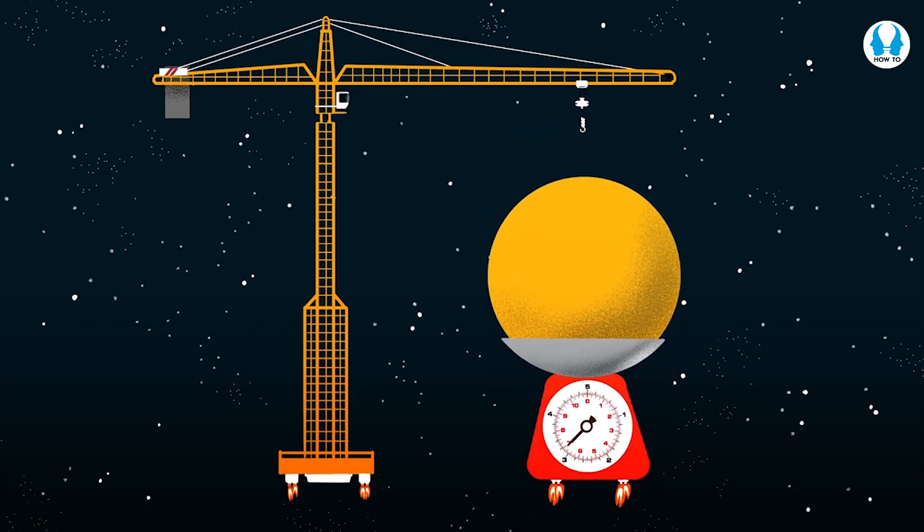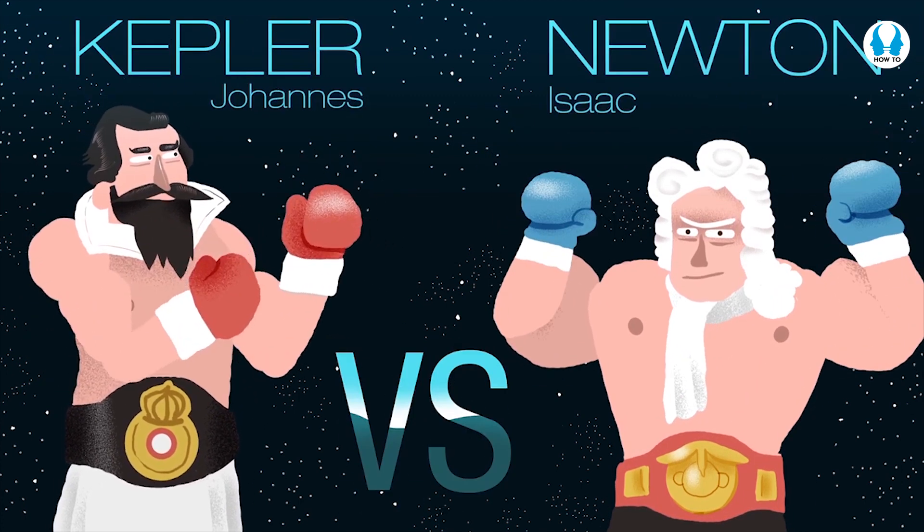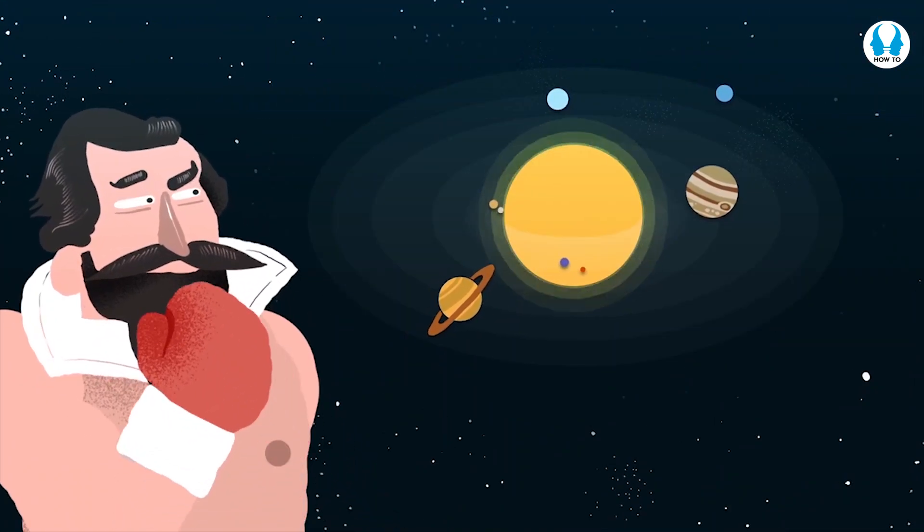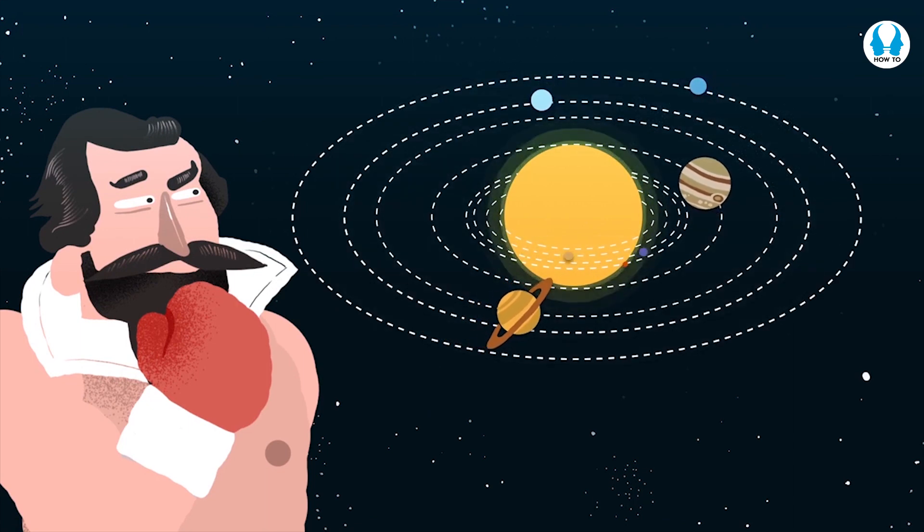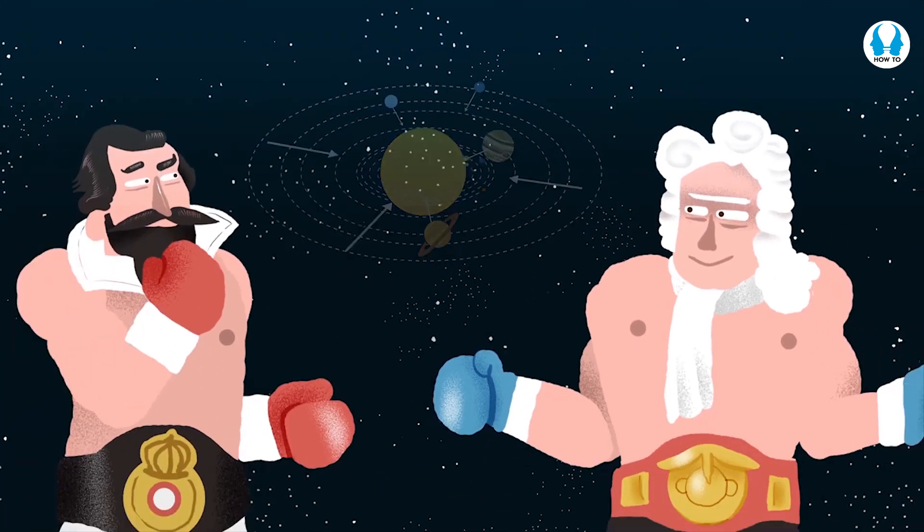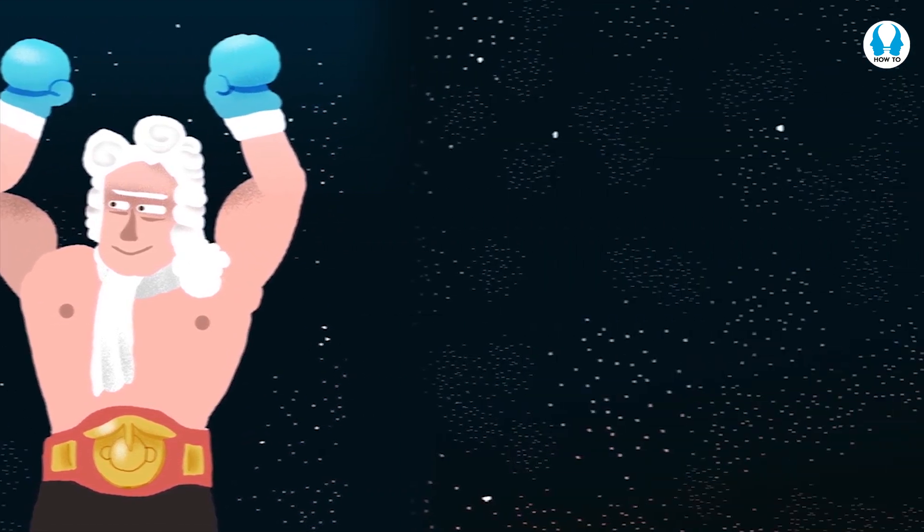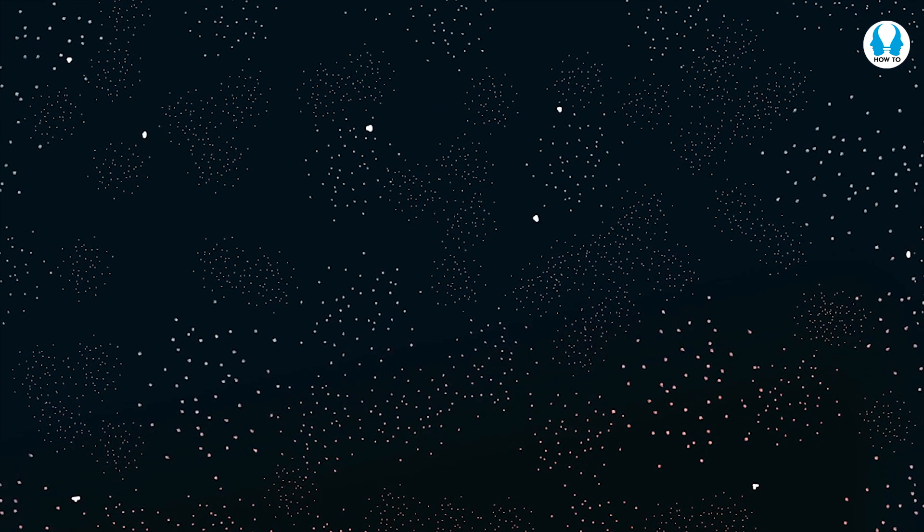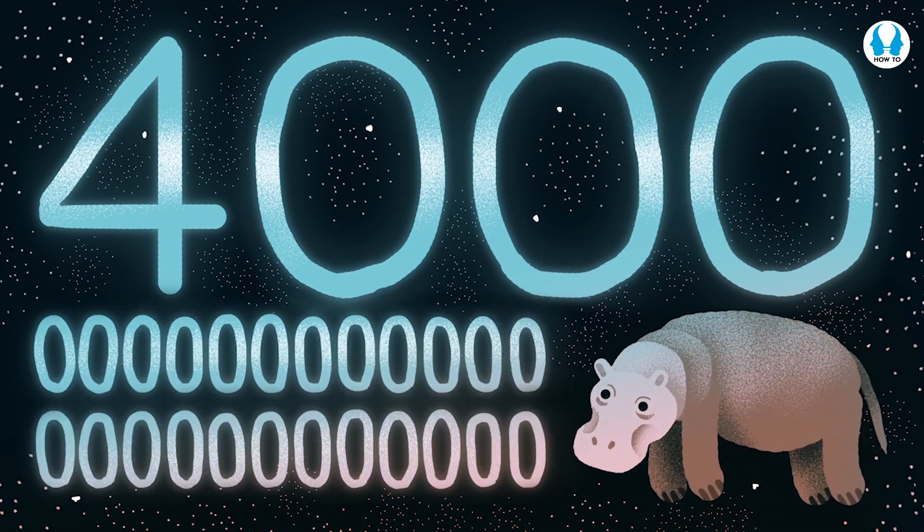Set aside those cosmic weighing scales. We need to bring in two astronomical heavyweights, Johannes Kepler and Isaac Newton. Kepler studied the motions of the planets, and didn't quite understand why they stayed in orbit around the Sun, until Newton came along 80 years later and formulated gravity. Using Kepler's laws and Newton's laws of gravitation, the mass of the Sun can be calculated as being equivalent to 4000 trillion trillion hippos!